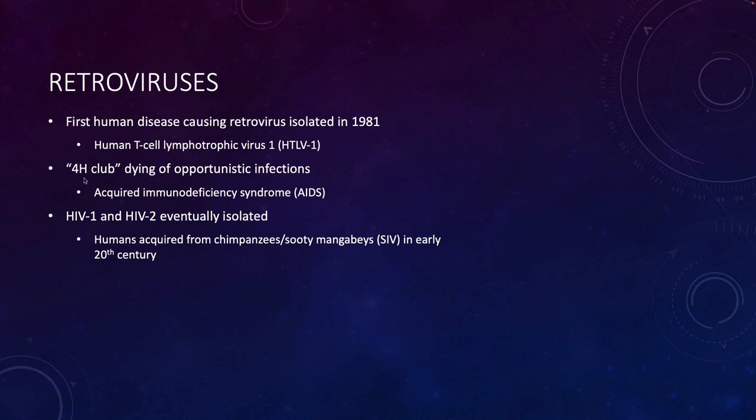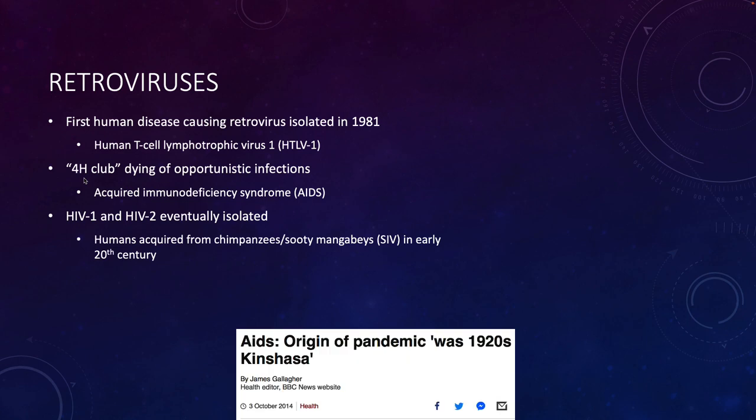These primates get a virus called simian immunodeficiency virus. It's thought really through the consumption of what's called bush meat—just whatever you're able to catch and eat, like people catching and eating primates. It's now pretty widely accepted that HIV got into people in the 1920s in Kinshasa, which is part of now the Democratic Republic of Congo.